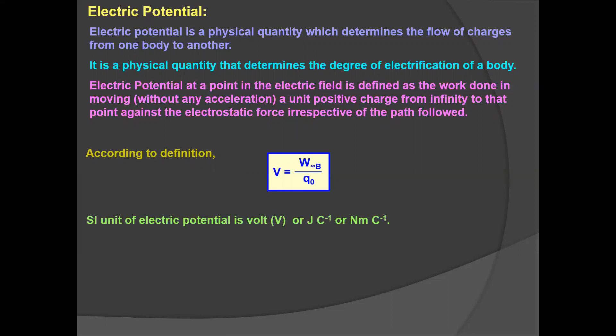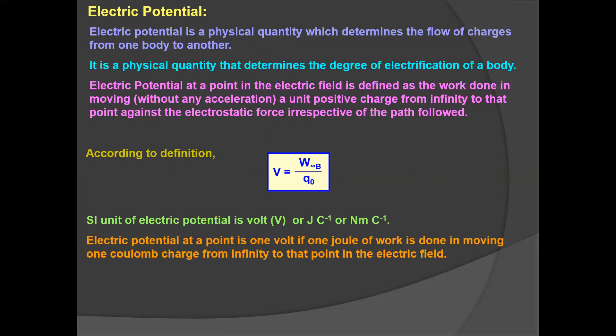Its SI unit is Volt, or Joule per Coulomb. From here, you can define one Volt: one Joule of work is done in moving one Coulomb of charge from infinity to a given point in the electric field.